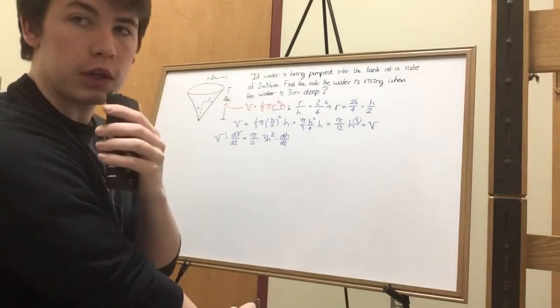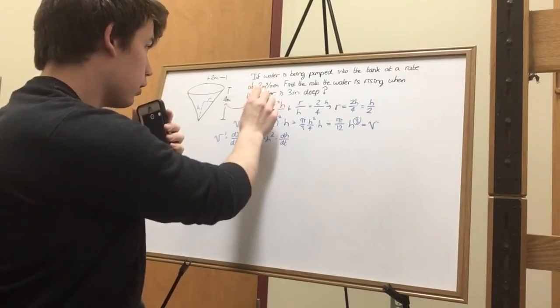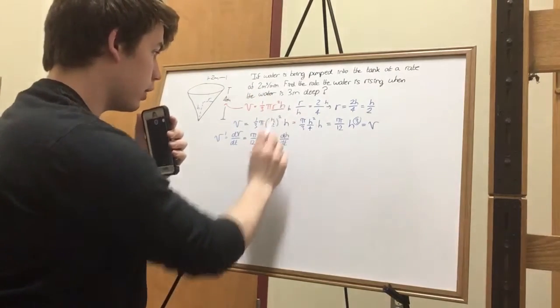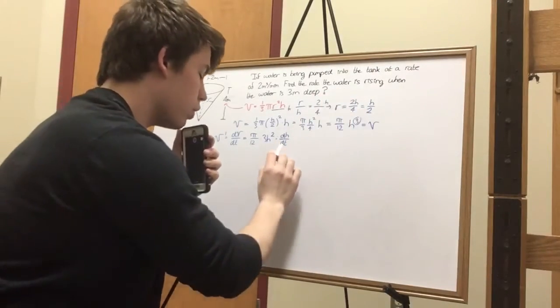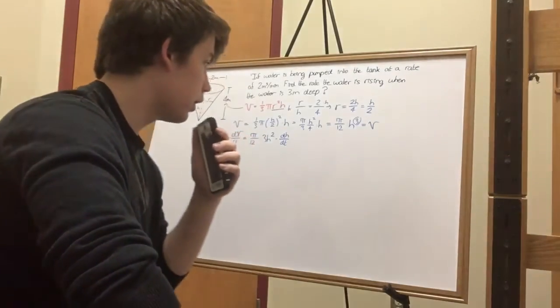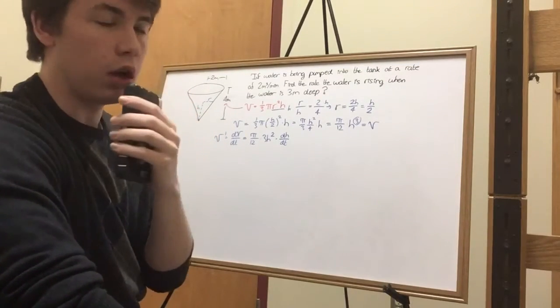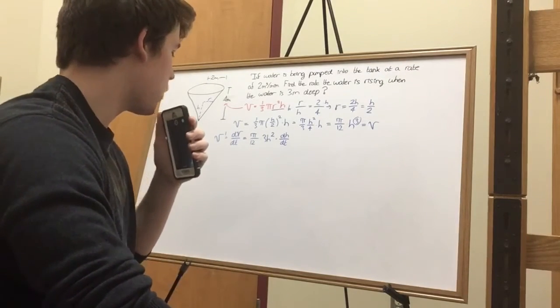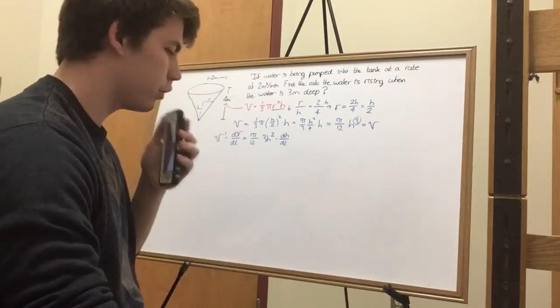So things are looking pretty interesting right now, considering we have the rate the water's going in goes here. We have the height we're given right there. And what we're looking for is the rate the water's rising, which is height. I think it's pretty good for us right now. My eyes are on the prize of those mathematical thighs. Let's use a different marker now. I like colors.